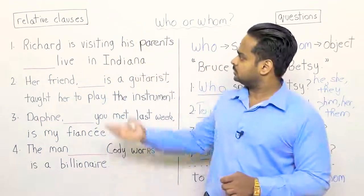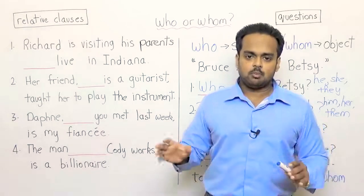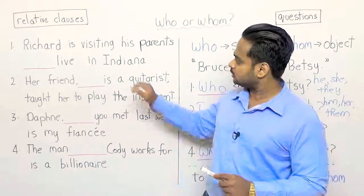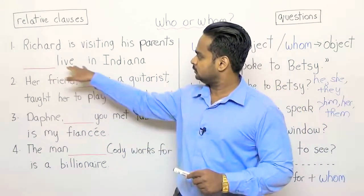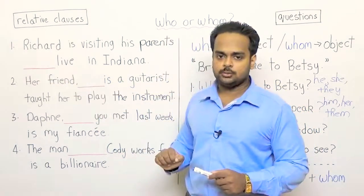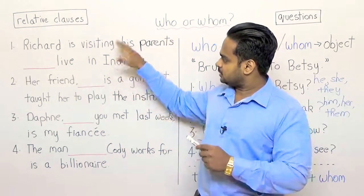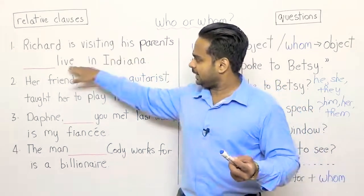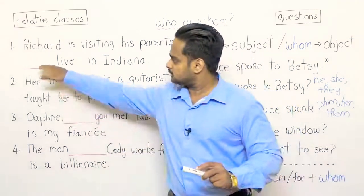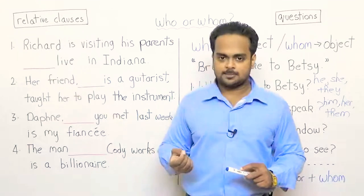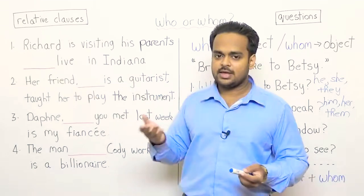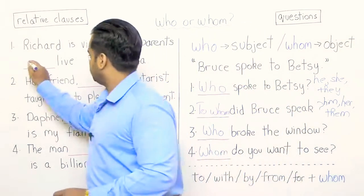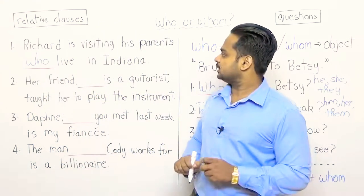Let's now take a quick look at some relative clauses. Relative clauses simply means that two or more sentences have been combined together, and to combine them we use who and whom. Take a look at this first sentence: Richard is visiting his parents who live in Indiana. Let's split this into two smaller clauses: Richard is visiting his parents, and his parents live in Indiana. Can you say they live in Indiana or them live in Indiana? Them live in Indiana is wrong; they live in Indiana is correct. So no M, no whom — Richard is visiting his parents who live in Indiana.